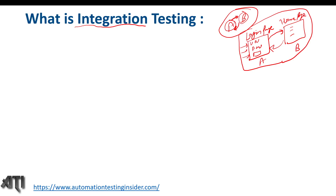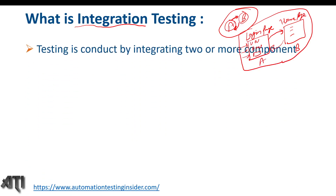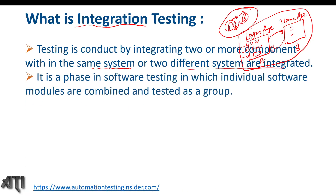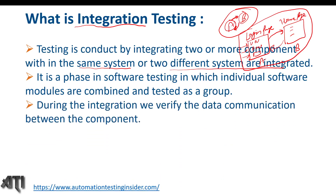Some formal definitions: integration testing is testing conducted by integrating two or more components within the same system, or when two different systems are integrated. It is a phase in software testing in which individual software modules are combined and tested as a group. During integration testing, we verify the data communication between components — how data flows from Module A to B and from B to A.